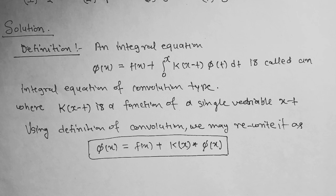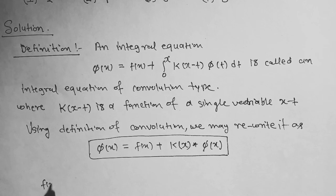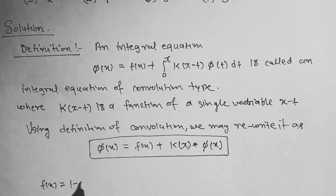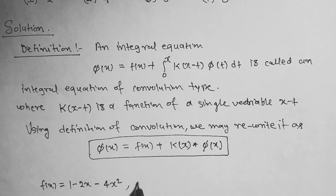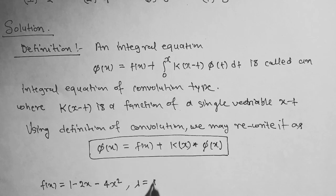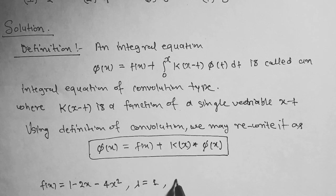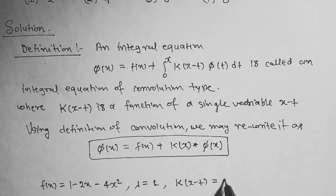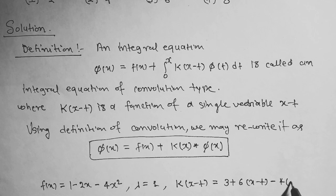In the given integral equation, f(x) is equal to 1 - 2x - 4x², lambda is equal to 1, and K(x-t) is equal to 3 + 6(x-t) - 4(x-t)².